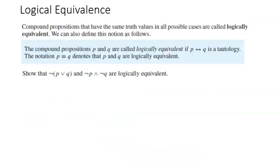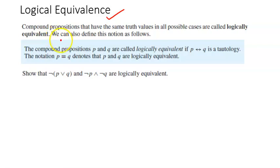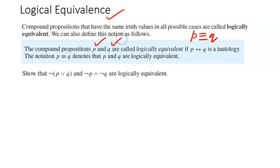The next topic is logical equivalence, which is one of the most important aspects of logic. Compound propositions that have the same truth values in all possible cases are called logically equivalent, written as P ≡ Q. Another way to define it: if the biconditional statement P if and only if Q is a tautology, then P and Q are logically equivalent.